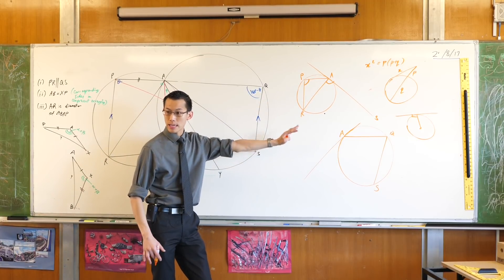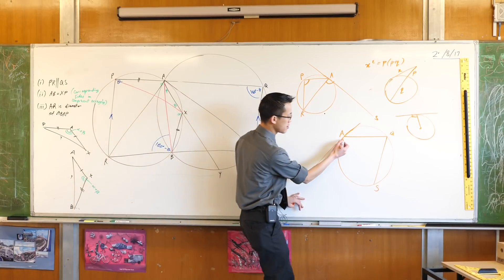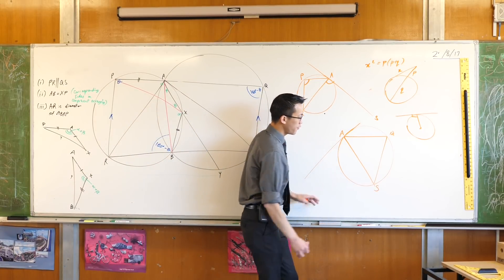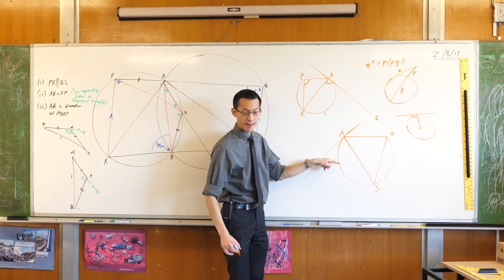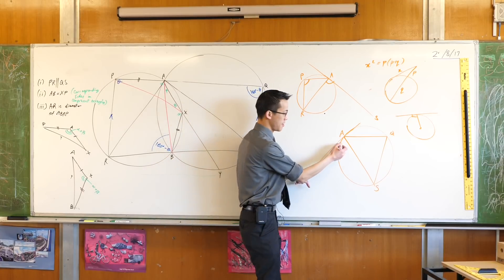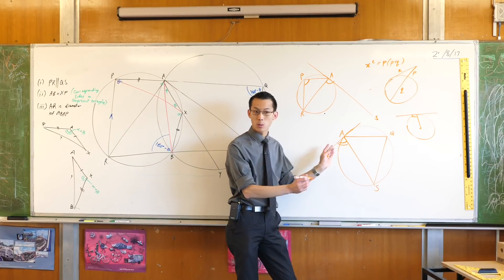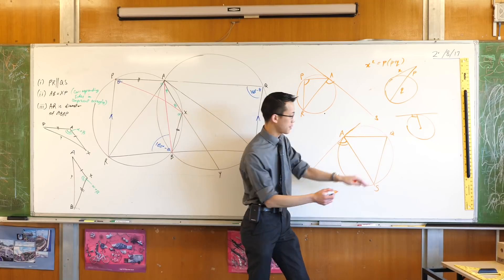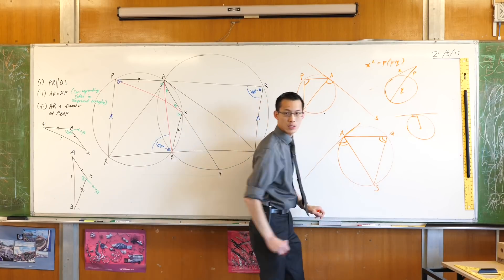In the right-hand circle, you can say the same thing. If you form a chord of contact here, then this angle will equal the angle in the alternate segment, like so.